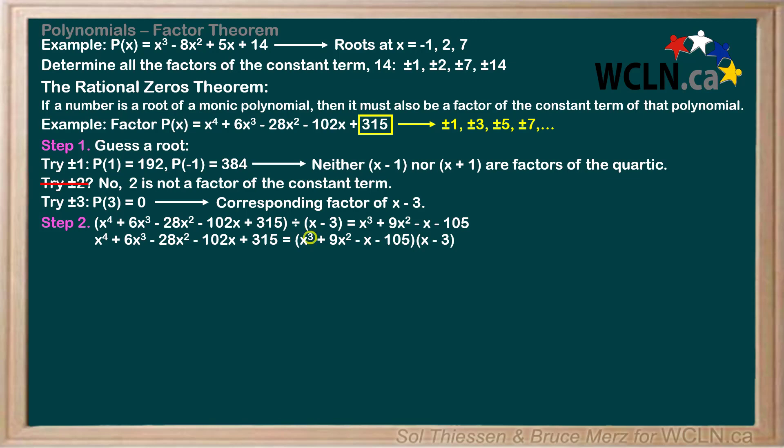Note that although the degree of this quotient, 3, is 1 less than the degree of our original function, 4, it is not quadratic, which means degree 2. According to step 3, we should now repeat steps 1 and 2 on the quotient expression until the new quotient is quadratic.